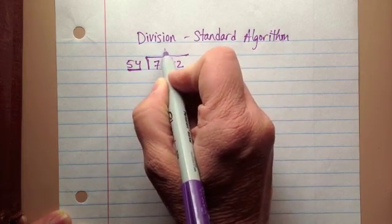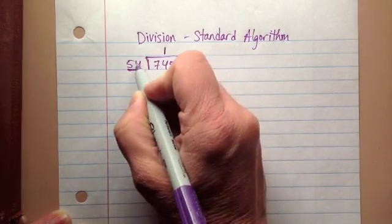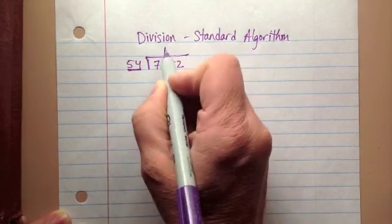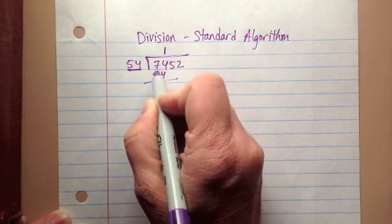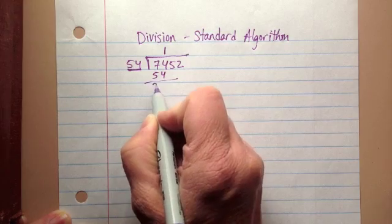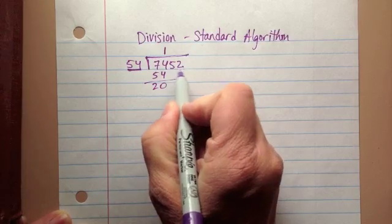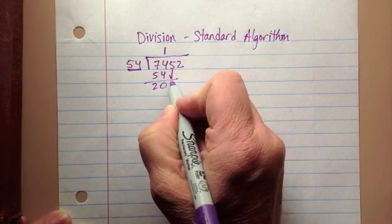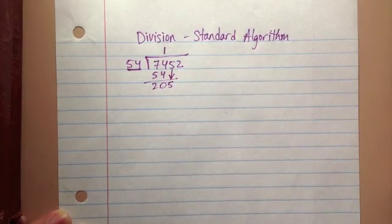There is one 54 in 74, so 1 times 54 is 54. 74 minus 54 equals 20. Now we can start looking at the next digit over. If we bring down this 5, that's the next digit over.